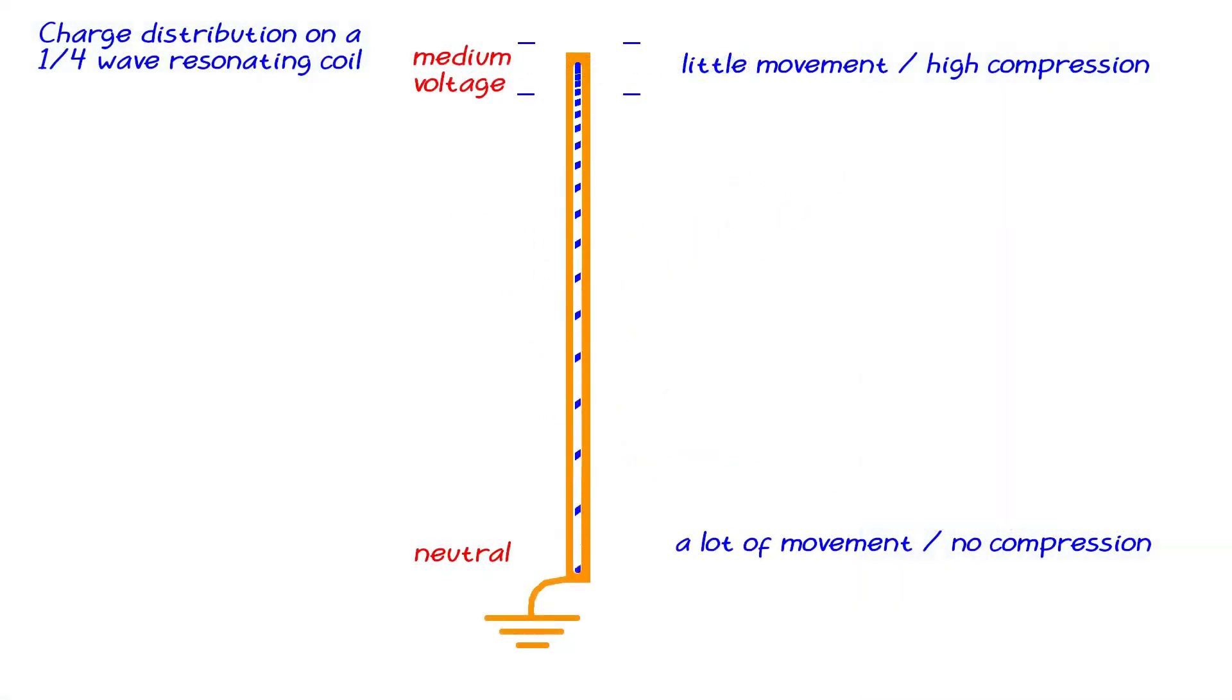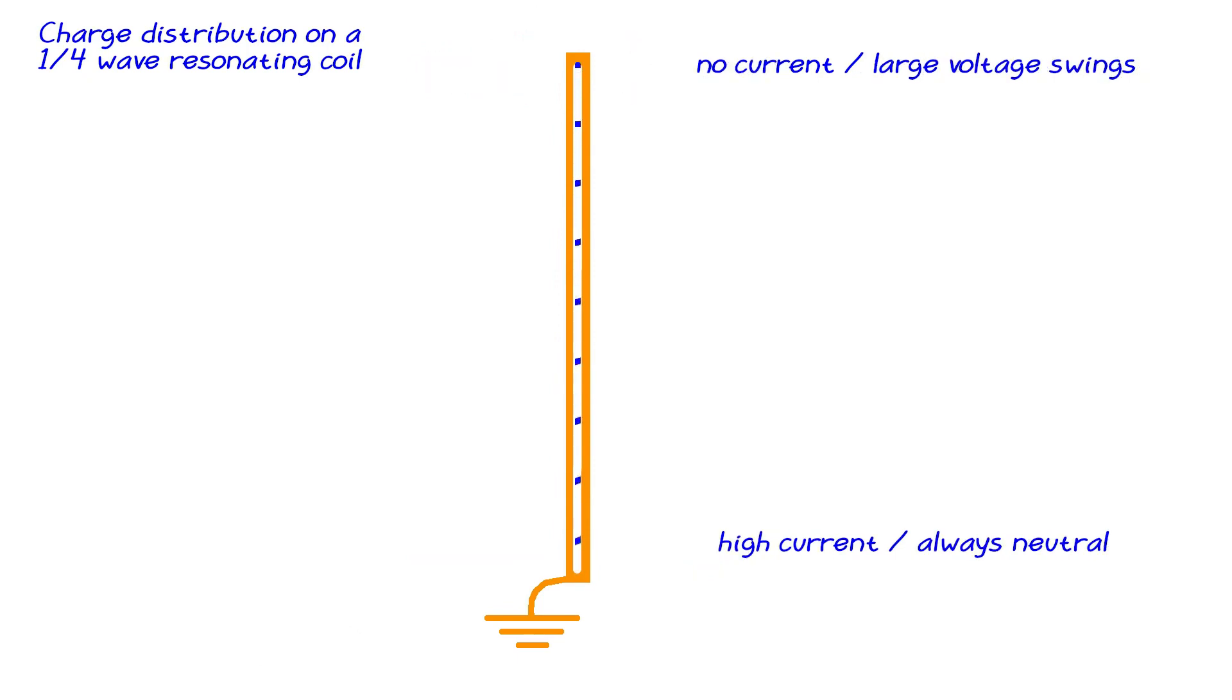As the charge gets compressed in the top end, the capacitance of this part of the coil comes into play. One could say that only half of the coil acts as an inductor, while the other half acts as capacitance, but the change is gradually over the entire length of the coil.